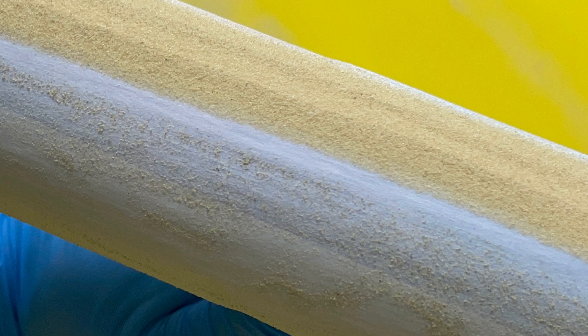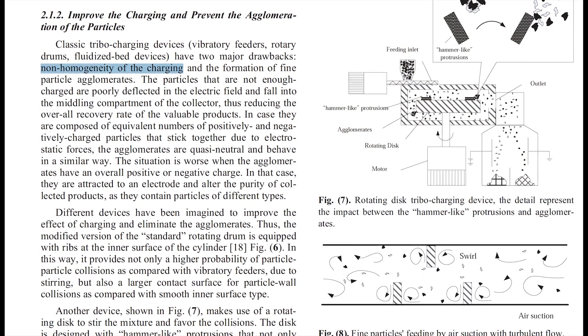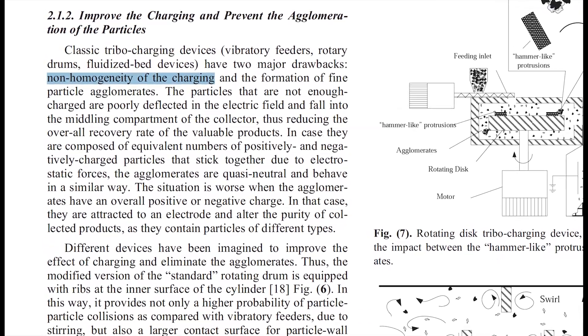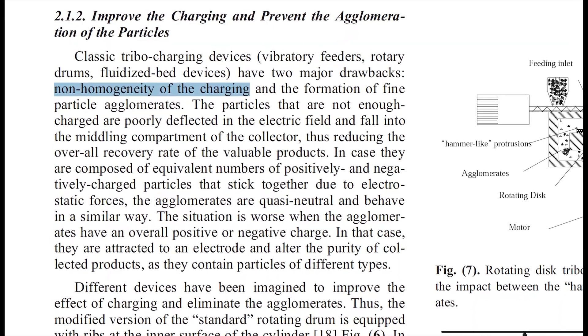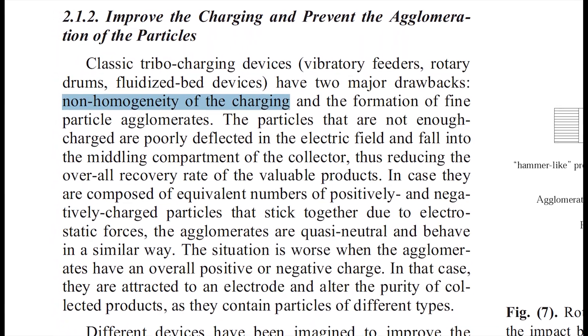The effectiveness of electrostatic separation depends on the ability of the particles to be charged and then separated by the electrostatic field. If the particle size distribution is not homogeneous, larger particles may not receive enough charge to be separated effectively, while smaller particles may become overcharged and repel each other,